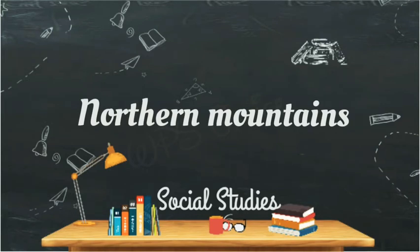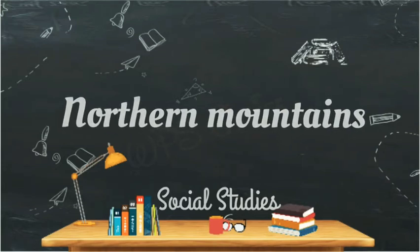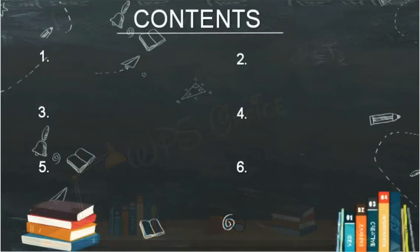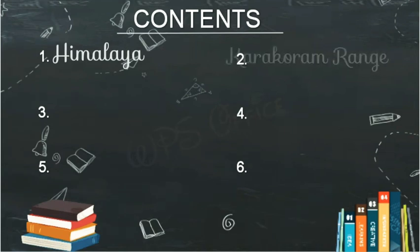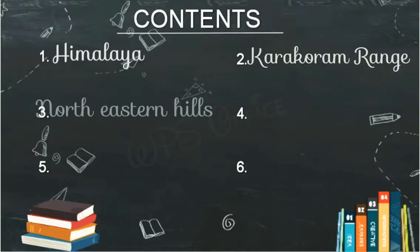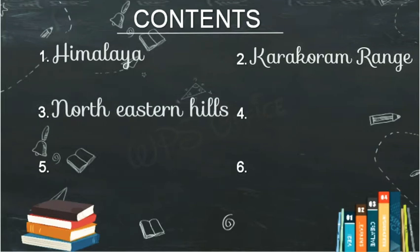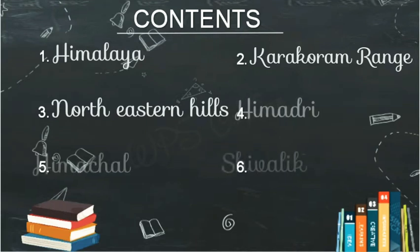You studied about the physical division of India. The main points of this chapter are: first, Himalaya. Northern Himalaya has 3 ranges — Himalaya, Karakoram, and Purvanchal North Eastern Hills. And Himalaya itself has 3 ranges: Himadri, Himachal, and Shivalik.